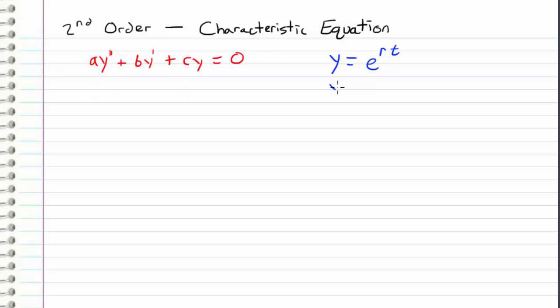And that makes y prime equal to r times e to the rt, because when we differentiate it we've got to multiply using the chain rule. And we get y double prime is equal to r squared e to the rt.